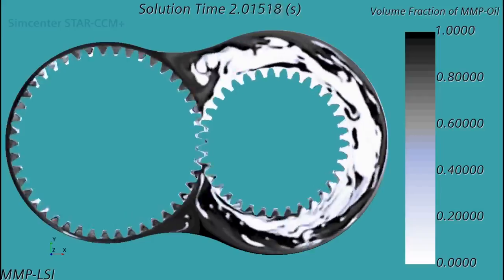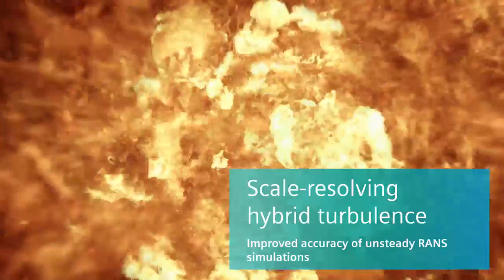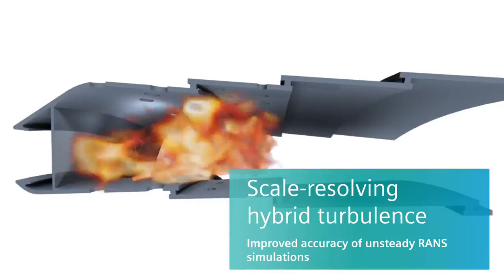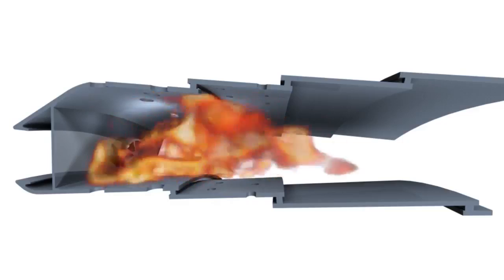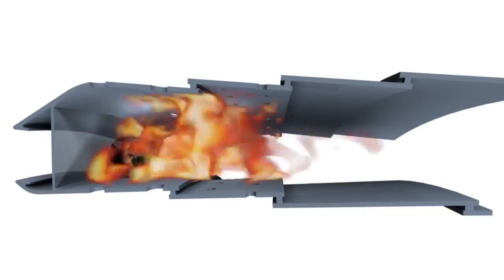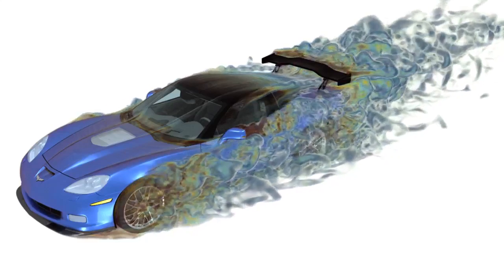The new scale-resolving hybrid turbulence model helps capture more small-scale turbulence structures in an unsteady RANS simulation. This means, for example, increased fidelity of your transient aerodynamics simulations without additional computational cost.